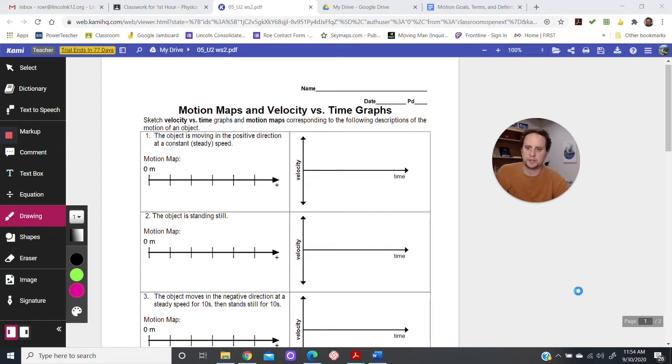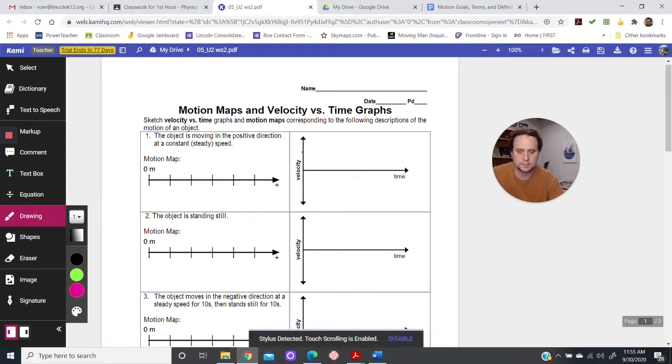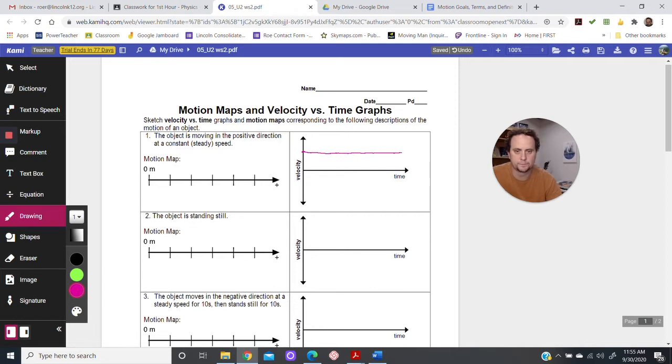The object's moving in the positive direction at a constant speed. So positive direction means we're going to have positive velocity. It's at a constant speed, so that's going to be a straight line, some number positive up here and it's going to stay that way as time goes on. So as time continues, it continues to maintain that same value. That's supposed to be a straight horizontal line. Hopefully that's what that looks like.